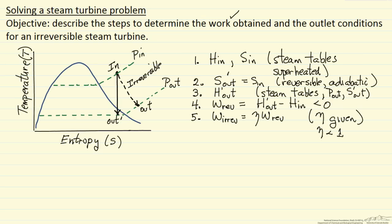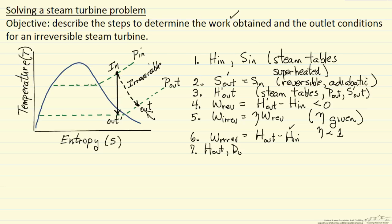Now we can calculate the outlet condition using the first law, because the irreversible work is going to be H out minus H in. This H out corresponds to the actual outlet point. We know the irreversible work and we know H in, so we can calculate H out from the first law. Now we have H out and pressure out, which means we can go to the steam tables to determine other properties such as entropy, temperature, and so on.